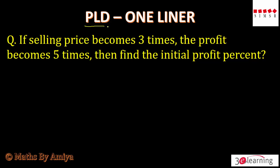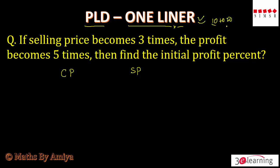I call this question a profit-loss-discount one liner. Many people solve it using cost price and selling price — assume cost price X and selling price Y and solve it. But this is not going to work. Because this is a one liner question, we can solve it within 10 to 20 seconds maximum. And this is one of the most asked questions in any examination.